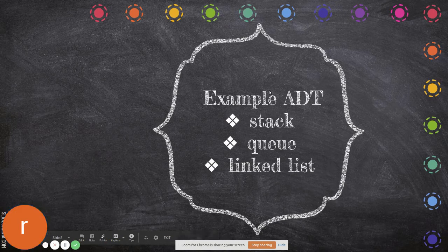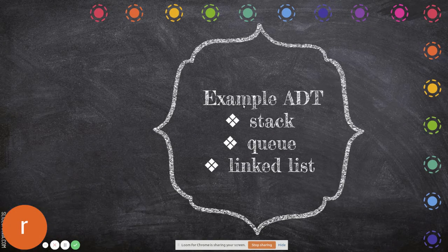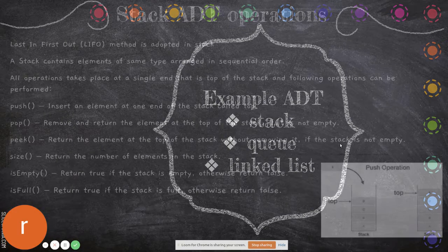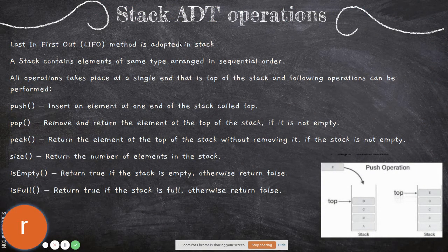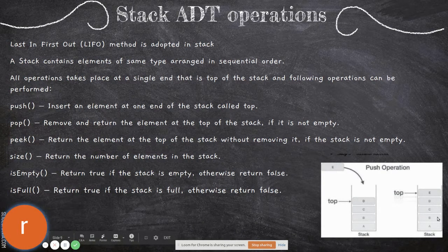Here we are going to see a few examples of abstract data types. Some of the examples are stack and linked list. So what is a stack? Stack is the Last In First Out method. What do you mean by Last In First Out? This is a stack.